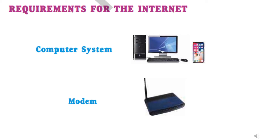Children, if we need an internet connection on a computer, there are two basic needs. First is a computer system — it is obvious that if we have a computer system, we can have an internet connection and work on it. The second is a modem. Modem stands for modulation and demodulation. A modem is a device which converts the analog signals coming through wires into digital signals that run on the computer. And when the computer sends back signals, it converts digital signals back into analog signals — that is why it is called modulation and demodulation.